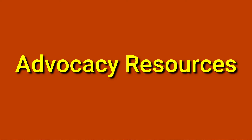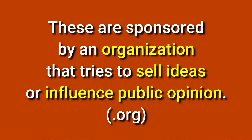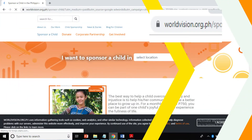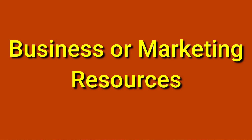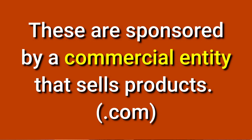Second are advocacy resources. These are sponsored by an organization that tries to sell ideas or influence opinion. They include .org in their URL, like this one. Third are business or marketing resources. These are sponsored by a commercial entity that sells products. Though they are often biased, they can still provide useful information. They include .com in their URL.